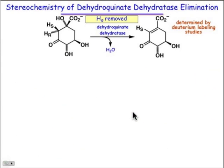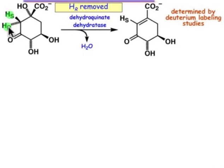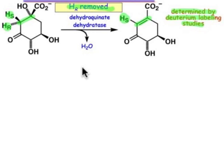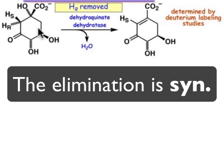So of the two hydrogens that could possibly be lost, the pro-S or the pro-R hydrogen across this carbon-carbon single bond to make this carbon-carbon double bond, deuterium studies show experimentally that it's the pro-R hydrogen that's removed. The hydrogen-S remains behind. That tells us right away that what we're dealing with is a syn elimination.